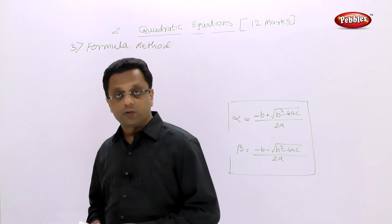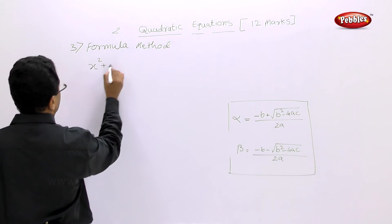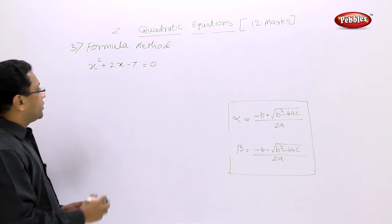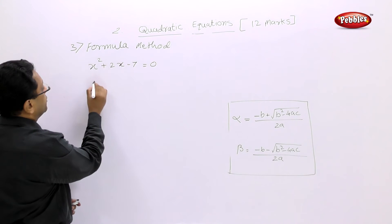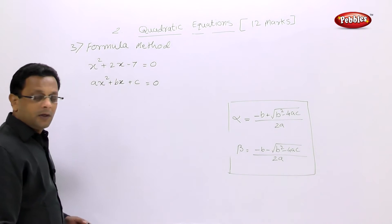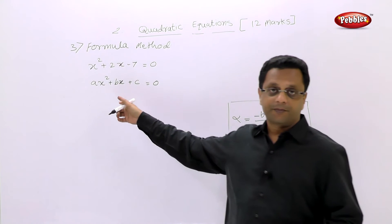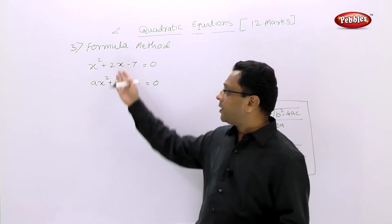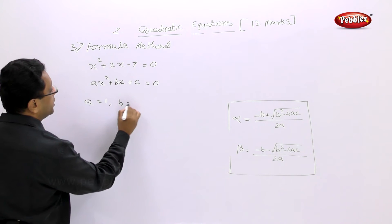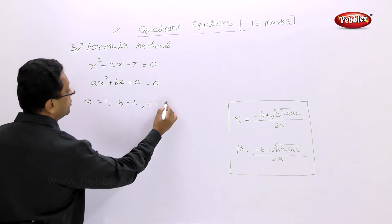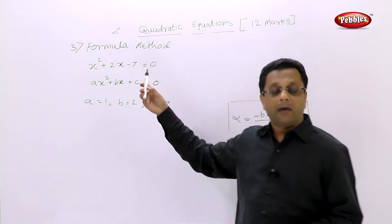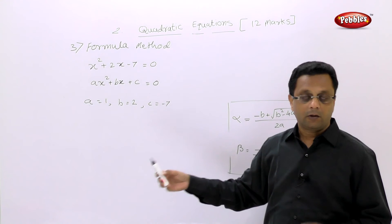The first example is x² + 2x − 7 = 0. The first step is to compare this equation with our standard form ax² + bx + c = 0. It is very important to correctly identify the signs — be careful not to make sign mistakes.